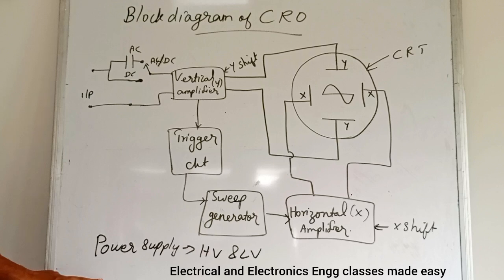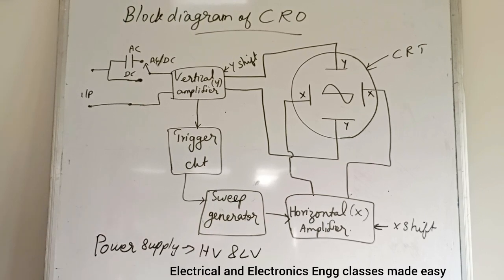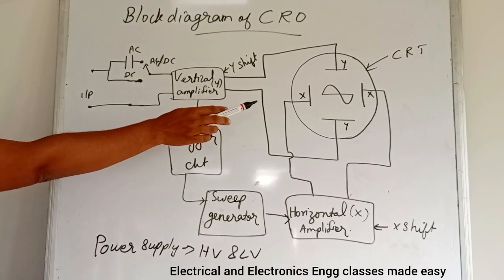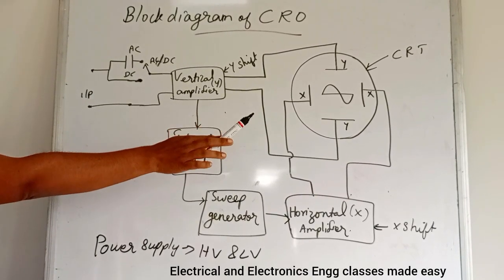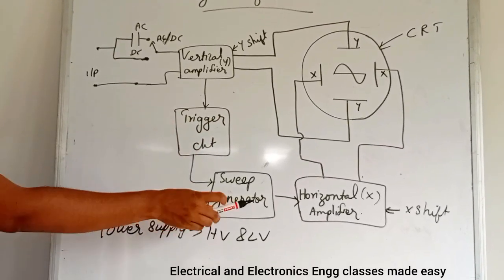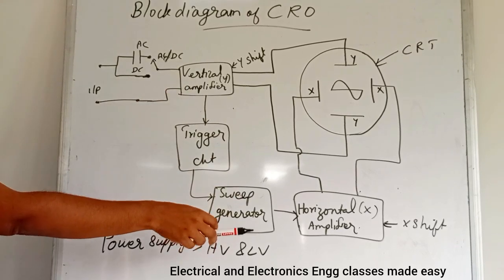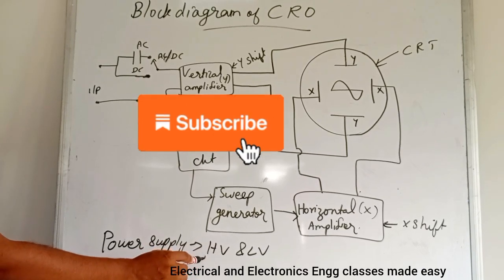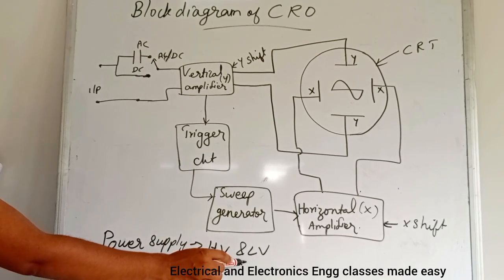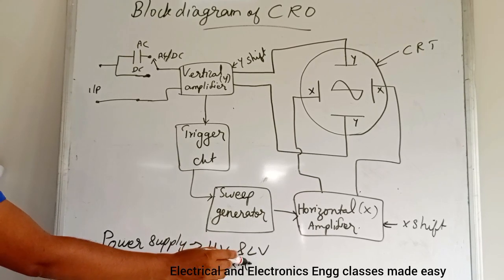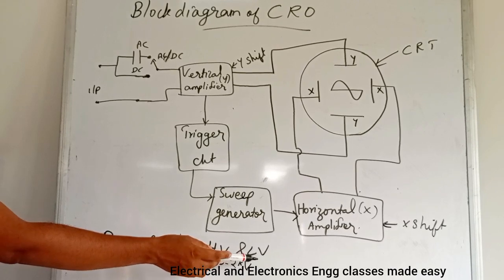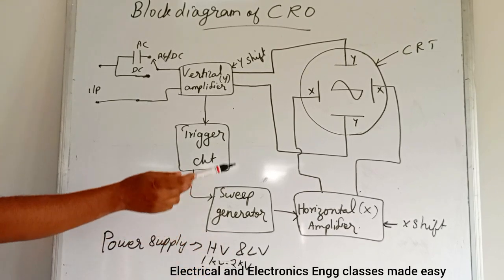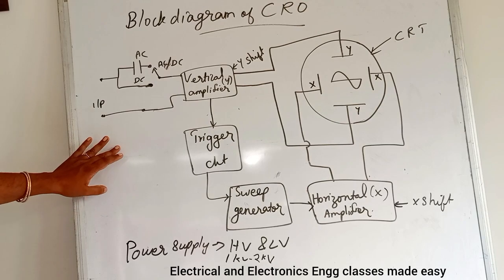The power supply has two sections: a high voltage section and a low voltage section. The high voltage section provides voltages of the order of 1 kV to 2 kV, required by the CRT to generate and accelerate the electron beam. The low voltage section provides voltage to heat the electron gun, as well as voltages required by other circuits of the CRO such as the vertical amplifier.